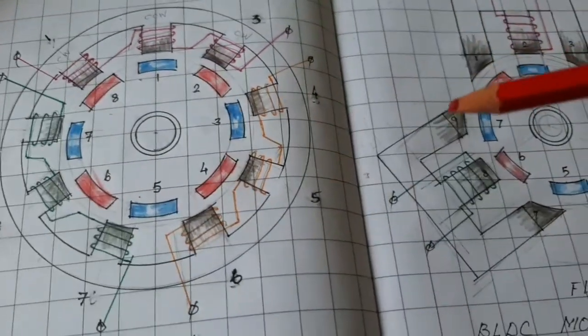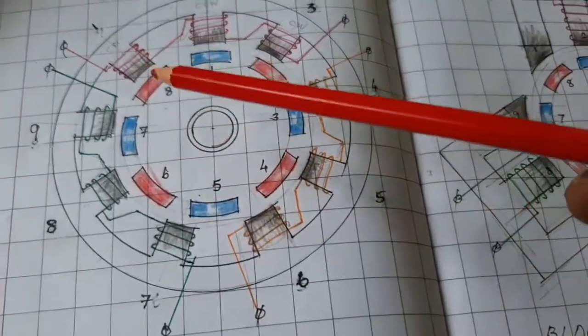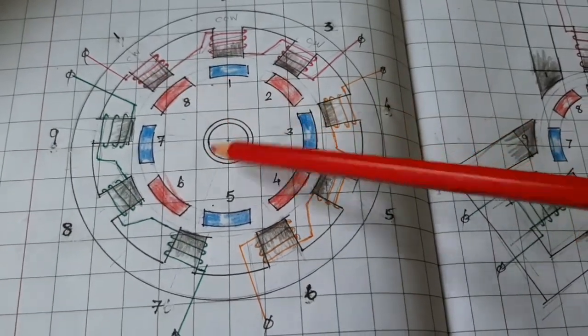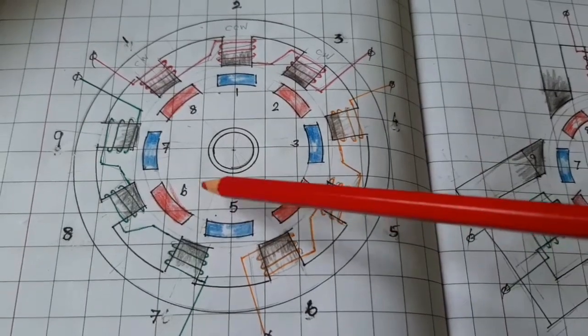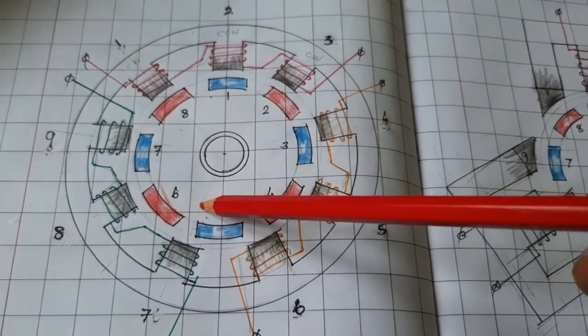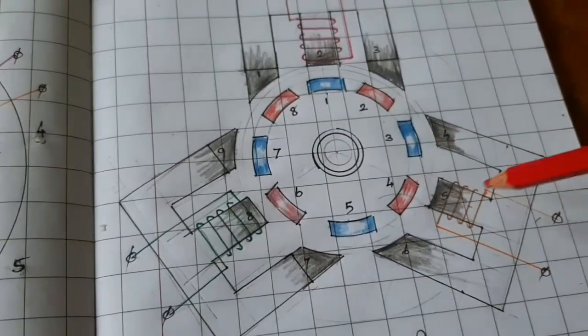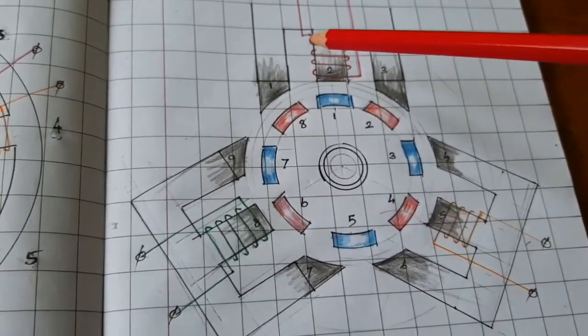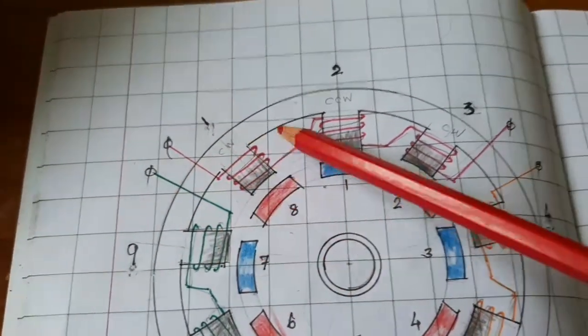Here, nine stator poles and eight rotor poles. I got the idea from this drawing. Now I'm using three transformers. Look at this E-core face: when you give the supply, the middle portion becomes north pole and the other two portions become south pole.